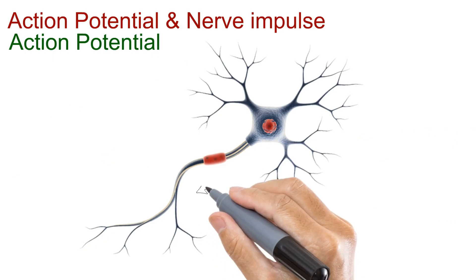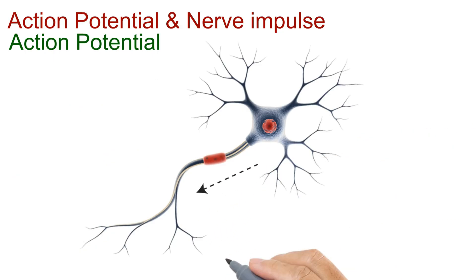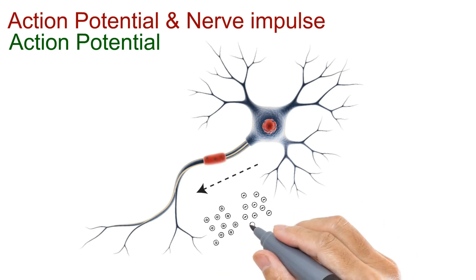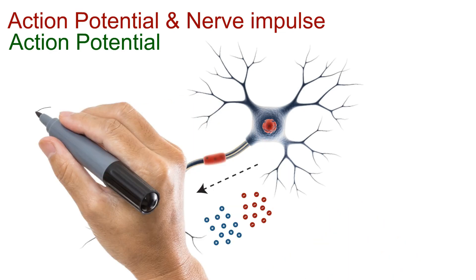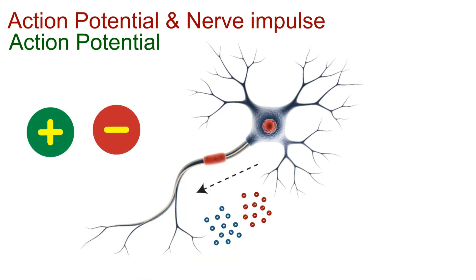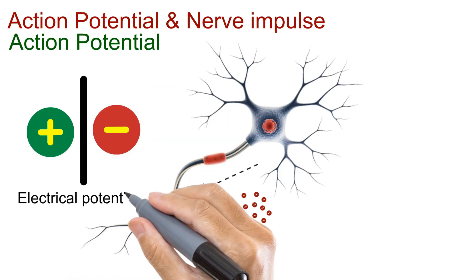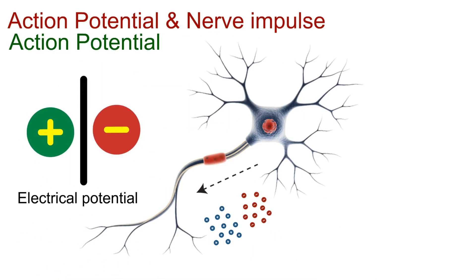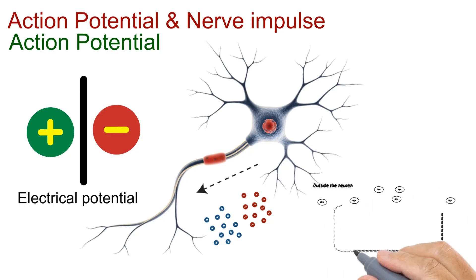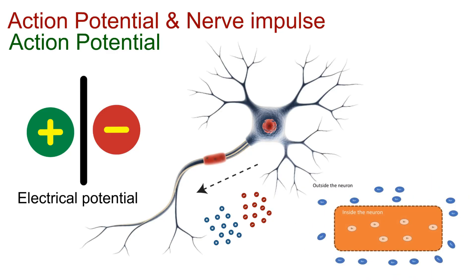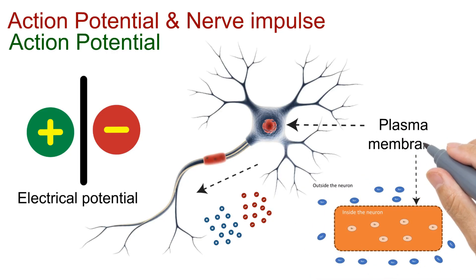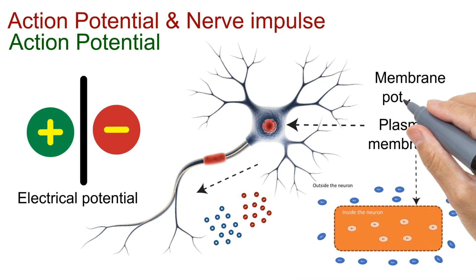Notice one thing: signals are passed through a neuron in the form of electrical charges. That means we're dealing with positive and negative ions. When positive and negative charges are separated by a barrier, an electrical potential is created. In the case of a neuron, these charged particles — the ions — are separated by the plasma membrane.